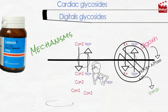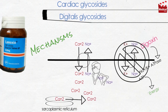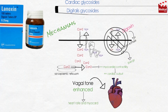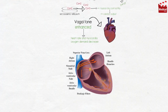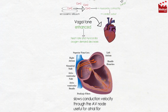This leads to increased intracellular calcium, inhibition of extrusion of calcium outside the cells, and also releasing calcium stored in the sarcoplasmic reticulum. All this increases the concentration of calcium intracellularly, so myocardial contractility increases, increasing cardiac output. Vagal tone is also enhanced, so both heart rate and myocardial oxygen demand decrease. Digoxin slows conduction velocity through the AV node, making it useful for atrial fibrillation.